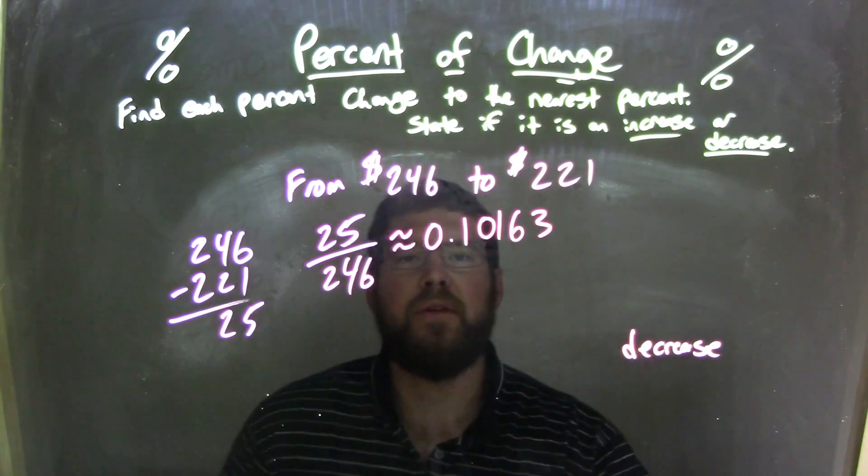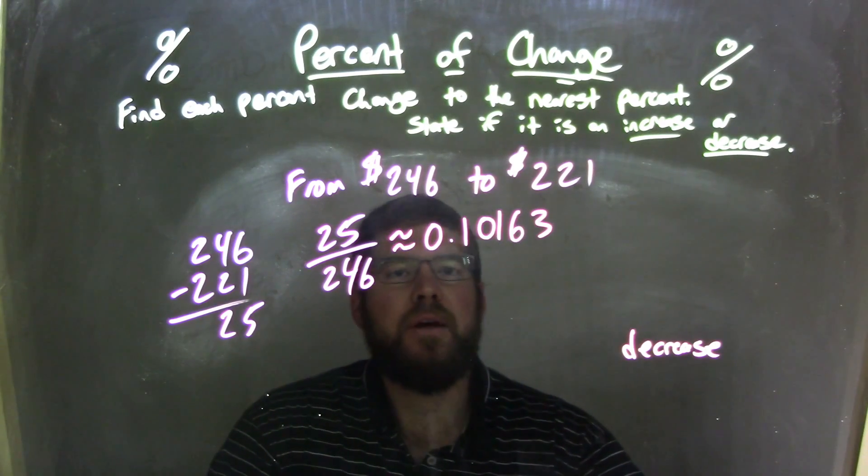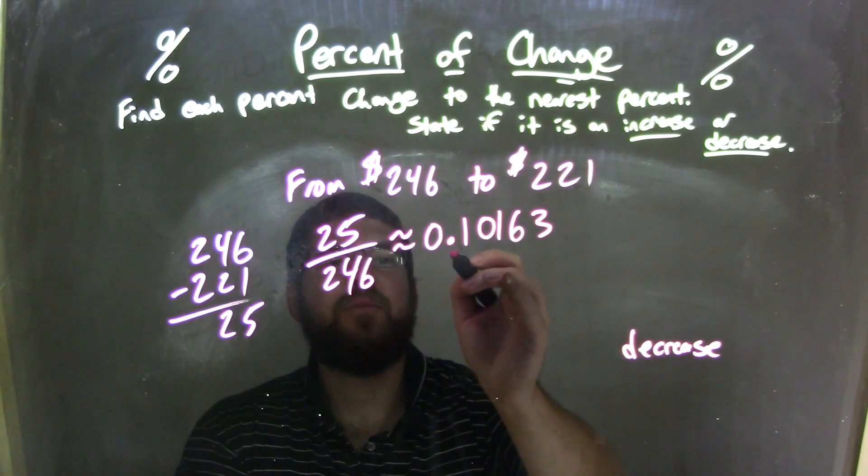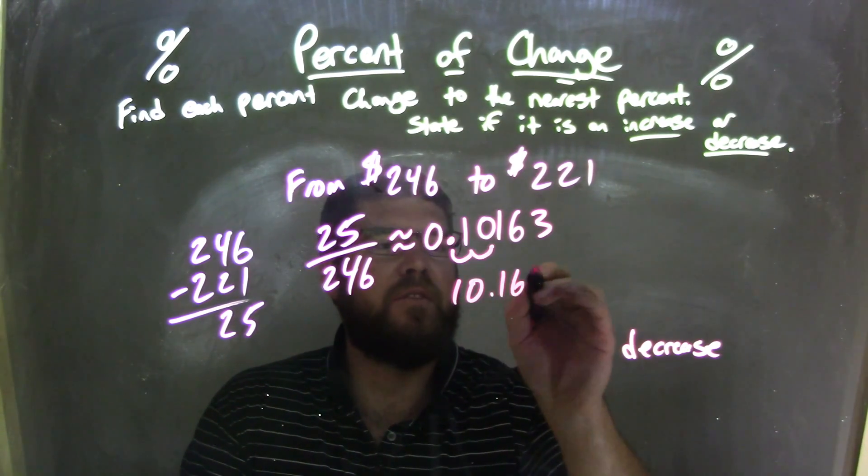So approximately 0.10163. From there, what we need to do is decide how to move that to a percent. We take that decimal and move it two units to the right. We're left with 10.163 percent,